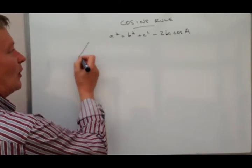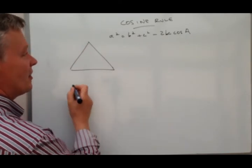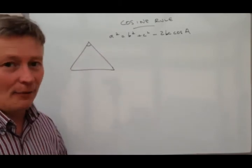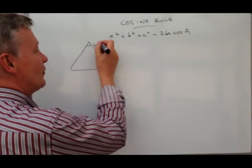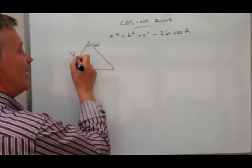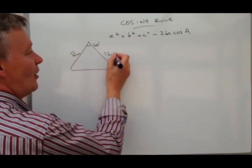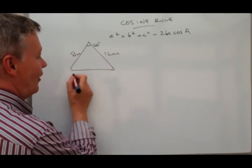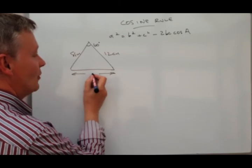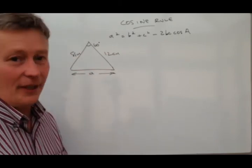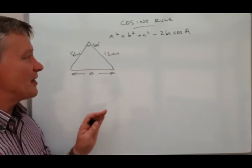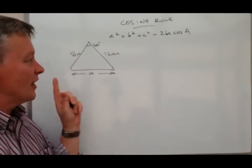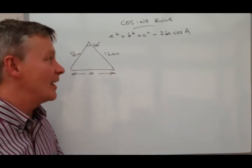Now typically a question will look like this and it'll say something like this angle here is 60 degrees, this is 8 centimeters and this is 12 centimeters, and what they're looking for you to do is to find out this length here which we'll call A. Very typically the type of question that you're going to come across, and really it's a case of just labeling it up and then putting the numbers in place.